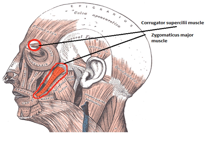Facial electromyography is a technique used to measure the electrical activity of the facial muscles by amplifying the tiny electrical impulses that are generated by muscle fibers when they contract. The face expresses a great deal of emotion; however, there are two main facial muscle groups that are usually studied to detect emotion. The corrugator superciliae muscle, also known as the 'frowning' muscle, draws the brow down into a frown and therefore is the best test for negative, unpleasant emotional response. The zygomaticus major muscle is responsible for pulling the corners of the mouth back when you smile, and therefore is the muscle used to test for a positive emotional response.